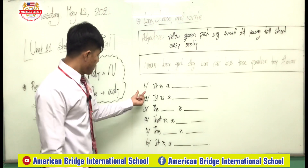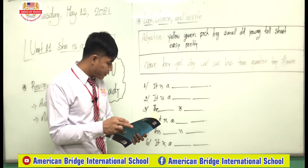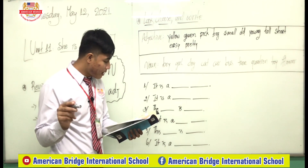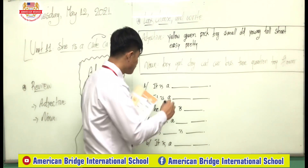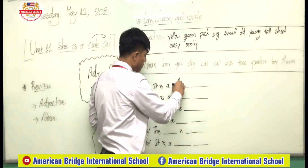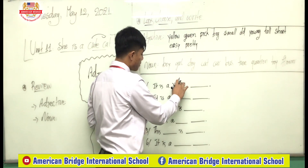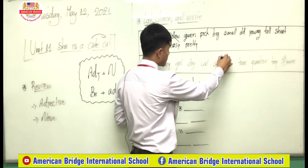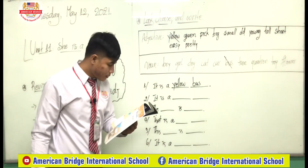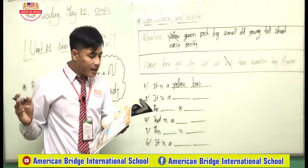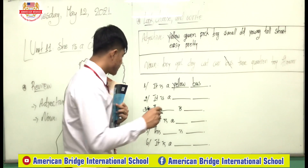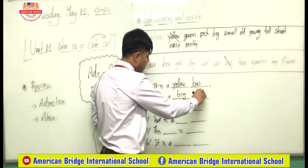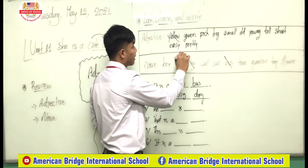Let's do it together. Number one: it is not a car, it is a bus — and what color is it? It is a yellow bus. Number two: look at picture two — it is a big dog.